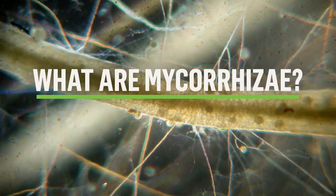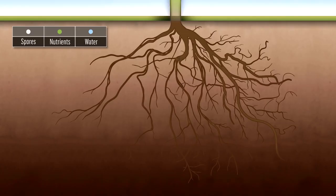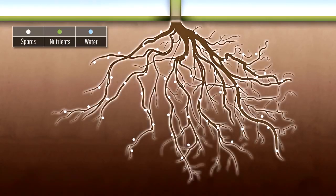How does this symbiosis take place? Mycorrhiza is the term used to describe the symbiotic relationship between mycorrhizal fungi and the plant's root system.